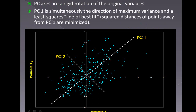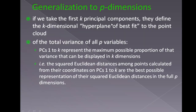If I have variables x1 and x2, shifting the axes to PC1 and PC2 — which are orthogonal, 90 degrees apart — results in a graph with no correlation, whereas x1 and x2 had a high correlation. PC1 is simultaneously in the direction of maximum variance and the least-squares line of best fit. Taking the first k principal components defines the k-dimensional hyperplane of best fit to the point cloud, representing the maximum possible proportion of total variance that can be displayed in k dimensions.